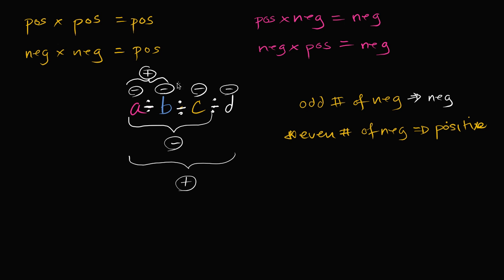We can use this knowledge to start dealing with negative numbers and exponents. If I were to say a to the 101st power, and we know that a is less than zero, what is this going to be? Well, this is taking 101 a's and multiplying them together. You have an odd number of negatives being multiplied together, so this whole thing is going to be less than zero — we know this thing is going to be negative.